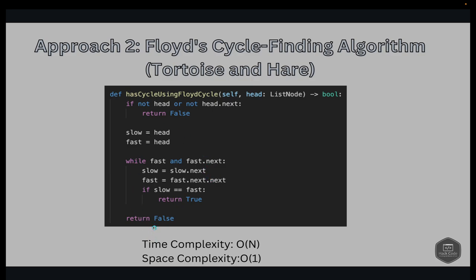If we process every node and find that fast is None or fast.next is None, we exit the loop and return false. The reason we check both fast and fast.next is because we access fast.next.next — if fast.next were None, we'd get a null pointer exception. So we must verify fast.next is also not None before proceeding. If it is None, it also means there is no cycle, so we return false.